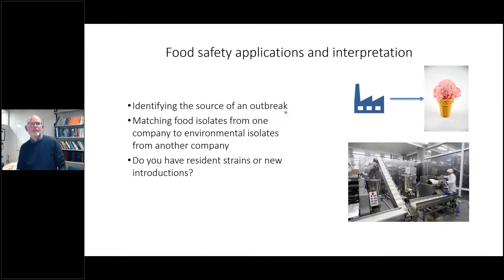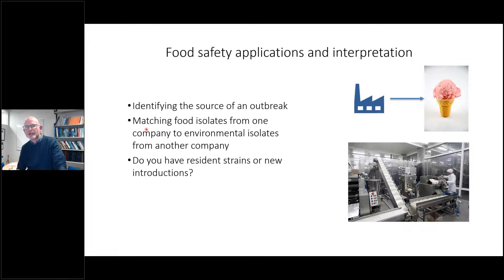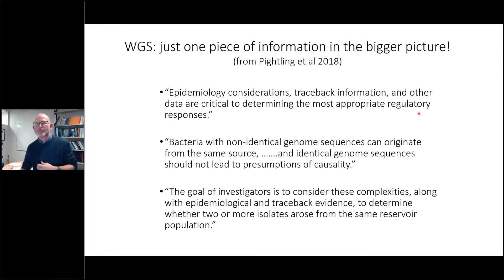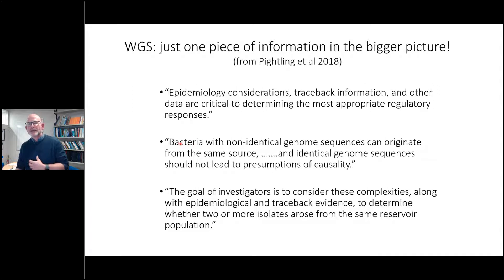For food safety application interpretation, I'll go through a few examples. Three different things to describe: identifying the source of an outbreak; matching food isolates from one company to another; and whether we have resident strains or new introductions. An important point is that epidemiological information and other traceback data are really crucial — you can't just use the whole genome sequencing data alone. Bacteria with very different genomes can come from the same source, and identical ones could come from different sources, so you can't necessarily infer causality from sequences alone.